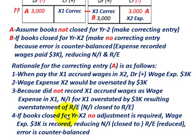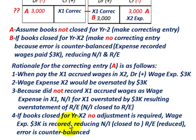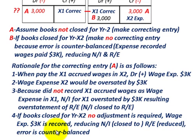Point four: if the books are closed in year X2, no adjustment is required because the wage expense of $3,000 is recorded in X2. That reduces net income, which is closed to retained earnings, which is then reduced. So the expense ultimately reaches retained earnings, and the error is counterbalanced.